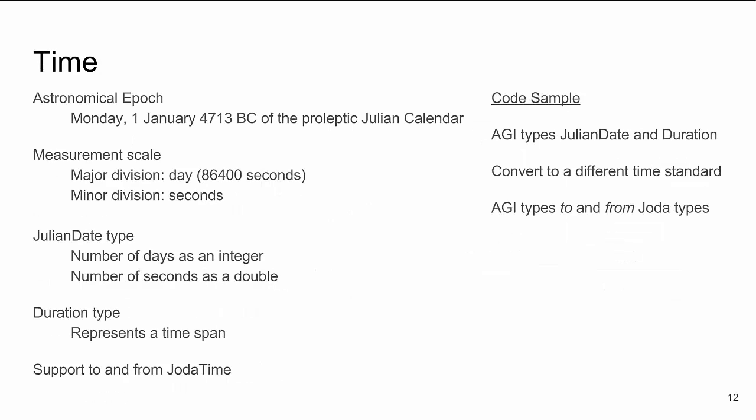Now we'll talk about time. Time is critical to components calculations and it's modeled accurately by the JulianDate type. The Julian calendar starts at the year 4713 BC and uses the usual day and second divisions. To get the best accuracy possible, we store the days part of the Julian date as an integer and the seconds portion of the day as a double in the JulianDate type. There's also a Duration type that represents the difference between two times, and we also provide support to and from JODA time.